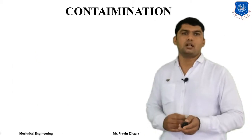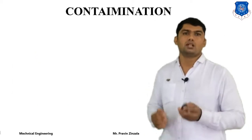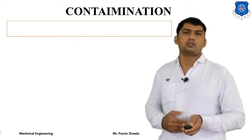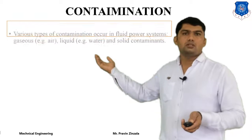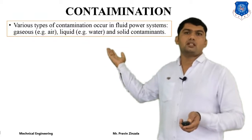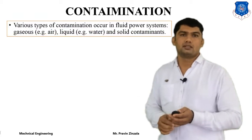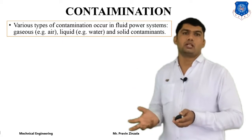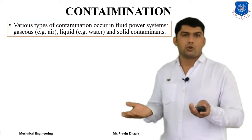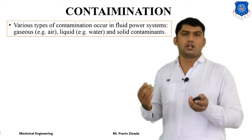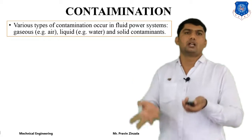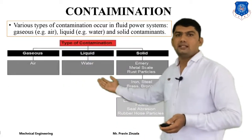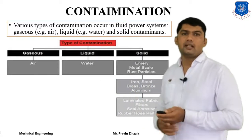Now we will discuss contaminants — what they are, their sources, and how to remove them. Contaminants are various types of impurities that occur in fluid power systems. They can be created during production, transportation, maintenance, or operation. There are basically three types: gaseous, liquid, and solid contaminants.